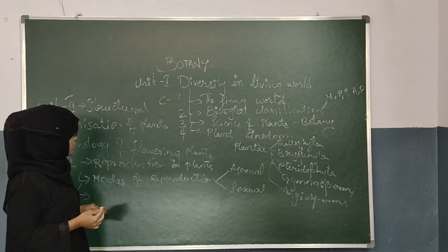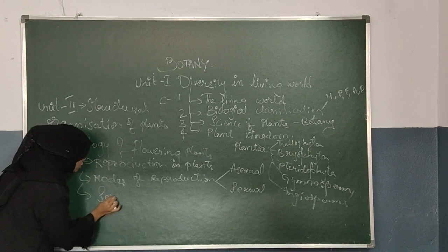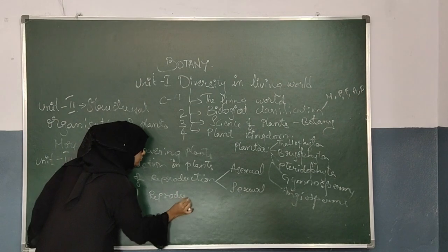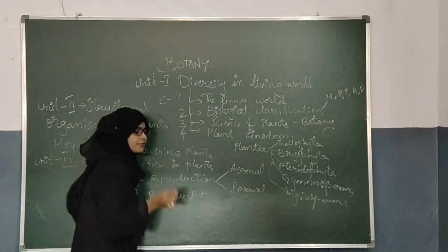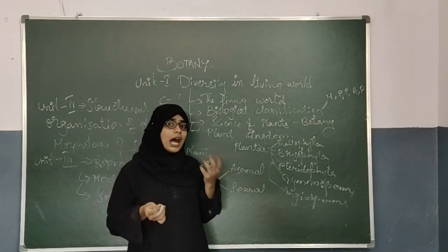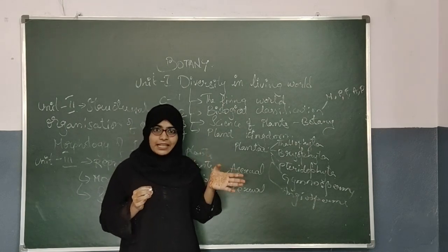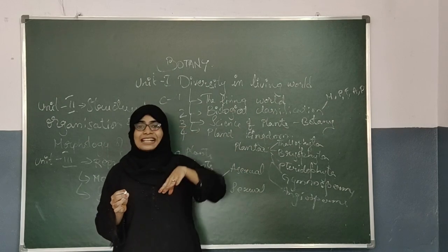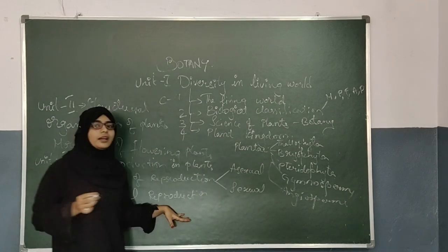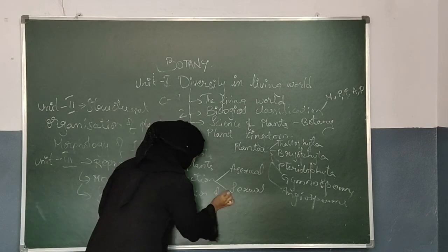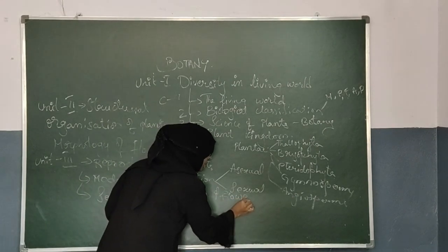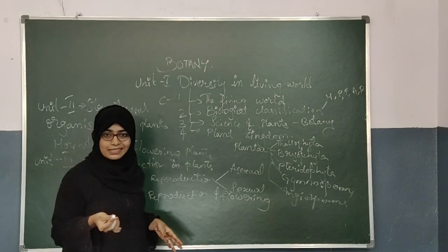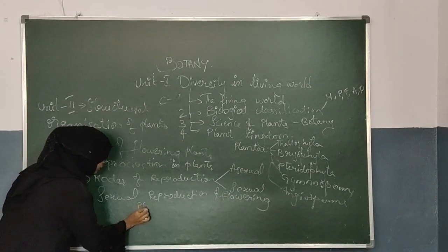Next, you will be having Sexual Reproduction in Flowering Plants. You will know what a fruit and seed are. How this reproduction takes place — how the flower is formed, how the fruit is formed, and how the seed is formed — everything comes under Sexual Reproduction of Flowering Plants. In this you will also be studying about ovule, ovary, stigma, and style.